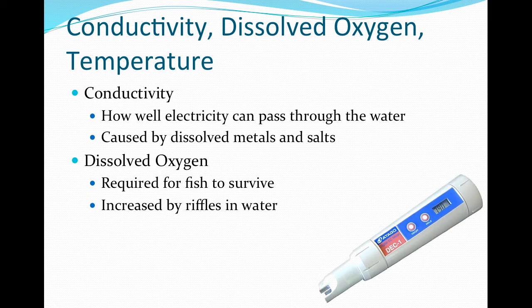Temperature is a measure of how cool or warm the water is. The typical range of surface water during the summer in Ohio is 18 to 24 degrees Celsius. The most likely source of thermal pollution is power plant discharge. Rapid fluctuations in water temperature can be harmful to most aquatic organisms and make fish susceptible to disease.